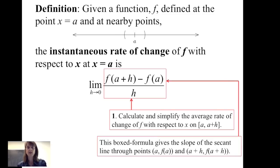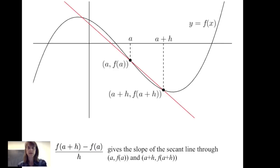Graphically, we can interpret this formula to be the slope of the secant line through the points (a, f(a)) and (a plus h, f(a plus h)). Looking at a possible graph of y equals f of x, we have those two points, and the red line between them we call the secant line. Its slope is given by f(a+h) minus f(a) divided by h, which is the average rate of change of f with respect to x on the closed interval from a to a plus h.